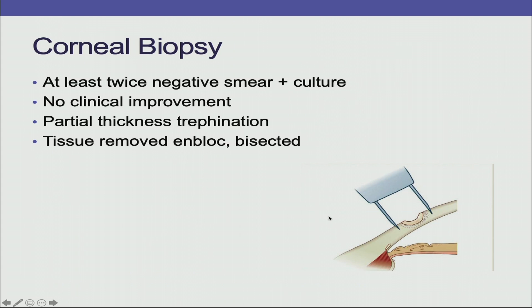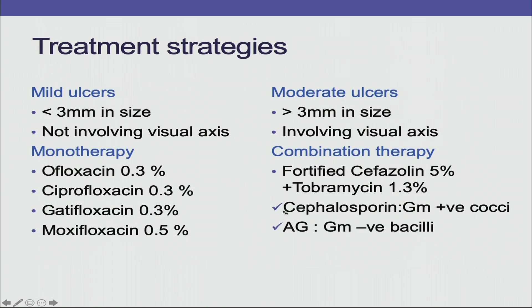Corneal biopsy is indicated in cases that are at least twice negative for smear and culture with no clinical improvement. You can do a partial thickness trephination — the tissue is removed, bisected, and sent for culture and sensitivity.